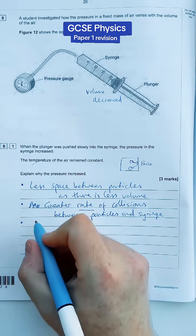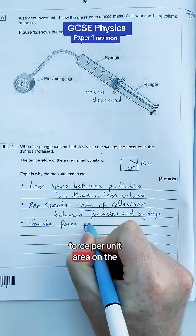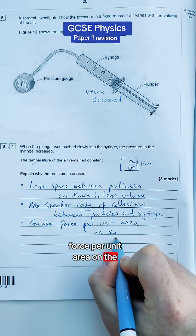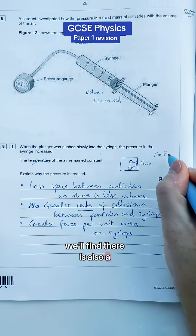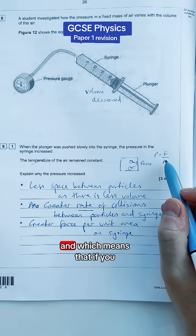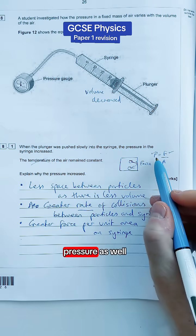Pressure - we've got to mention force so that means there's a greater force per unit area on the syringe. And if we look at our equation sheet we'll find there is also an expression for pressure which is force divided by area, which means that if you've got more force you're then going to have a greater pressure as well.